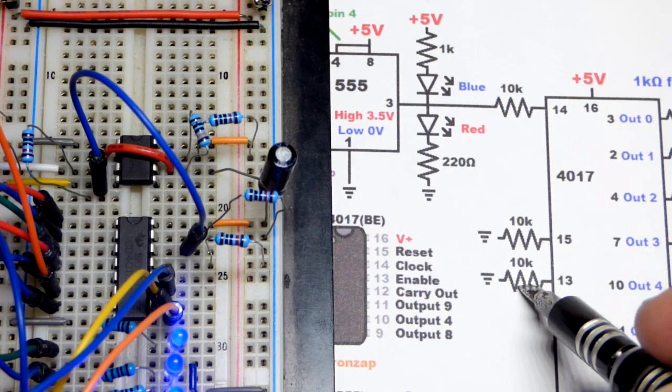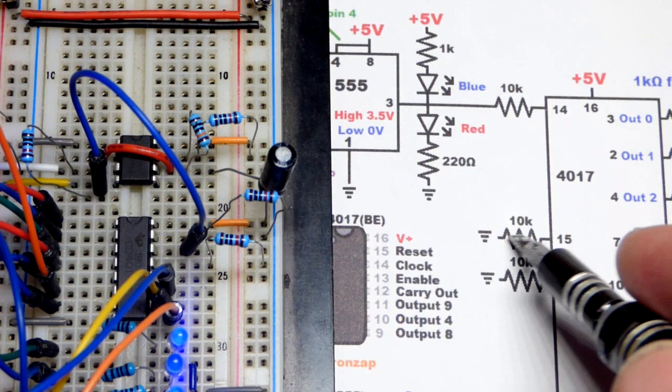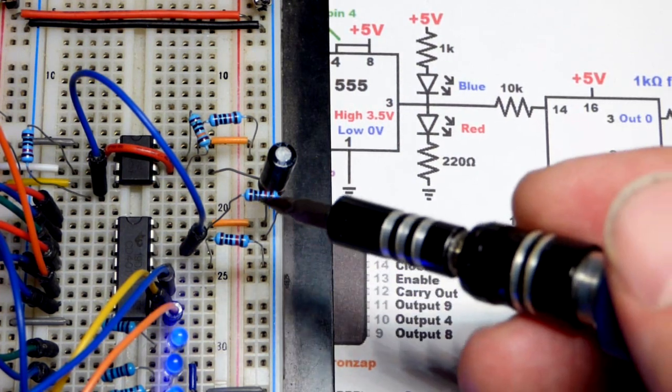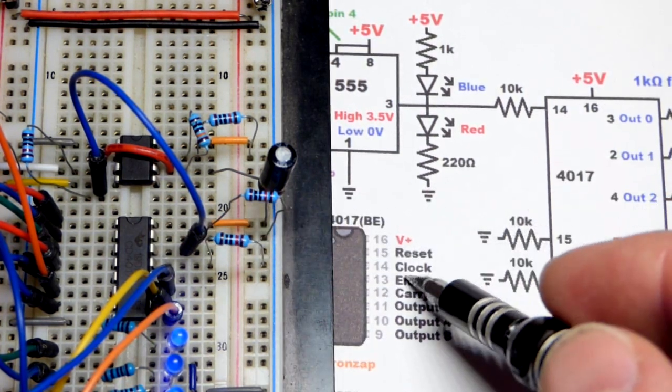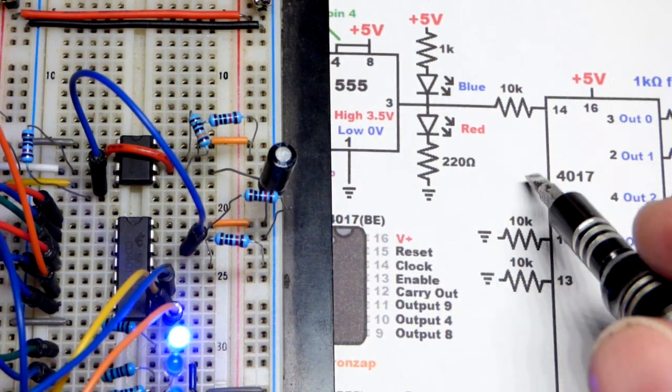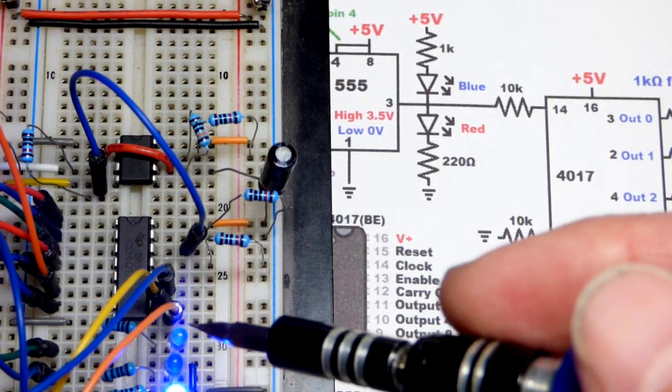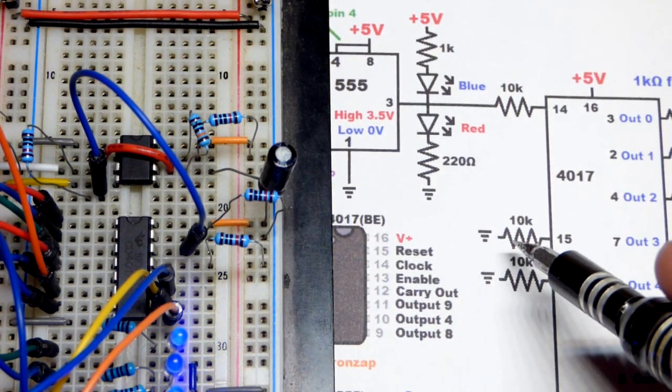And then we have these two pins. I think you may be able to connect them directly to the ground, but I added a 10K just in case. The pin 15 there, that's the reset pin. If we give a high input, so we could add a switch to a positive supply, then it's going to reset this, bring the LED right back to zero.